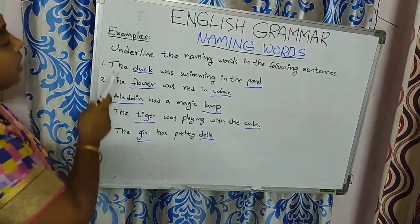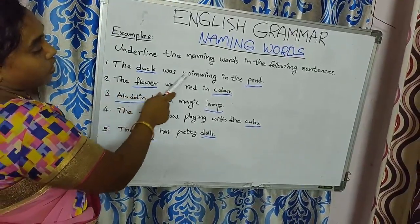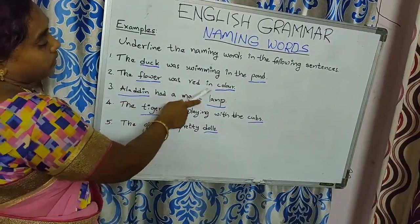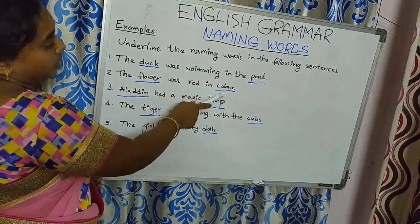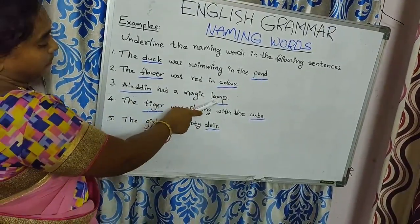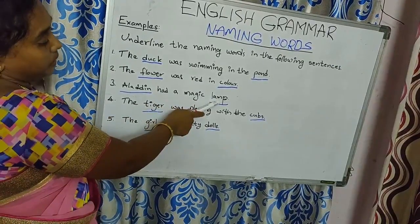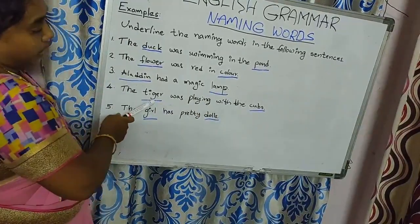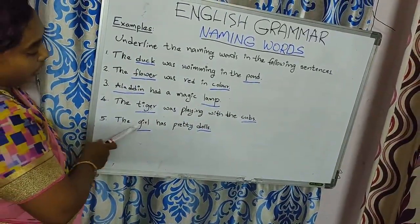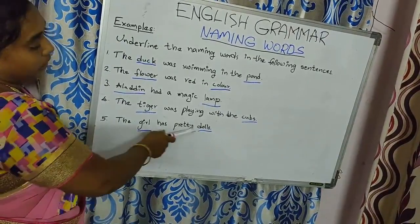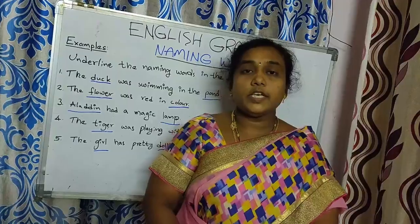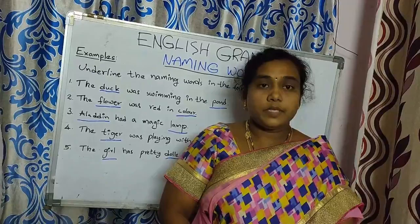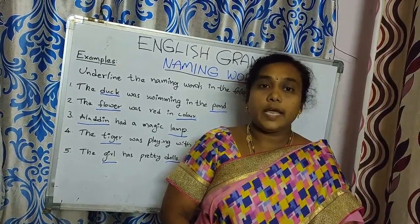Once again, let us see the sentences. The duck was swimming in the pond — duck and pond are naming words. The flower was red in color — flower and color are naming words. Aladdin had a magic lamp — Aladdin and lamp are naming words. The tiger was playing with the cubs — tiger and cubs are naming words. The girl has pretty dolls — girl and dolls are naming words. So children, I hope you understood this topic. Kindly open the grammar textbook and see page numbers 14, 15, 16, 17, 18, and 19. Complete those in the textbook.